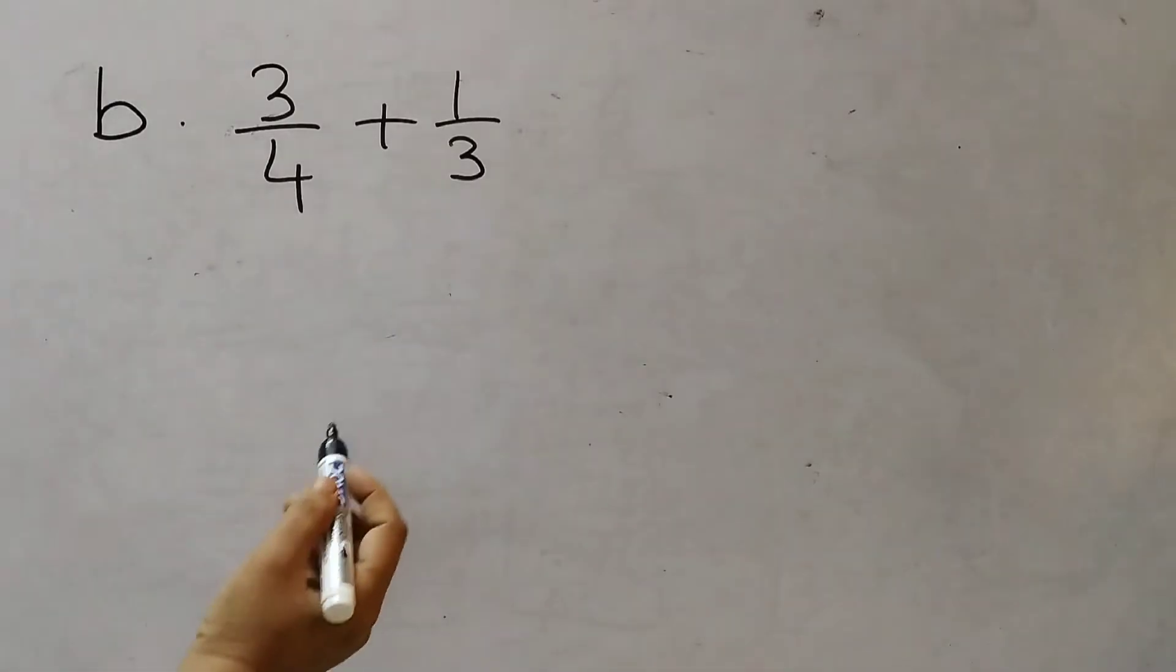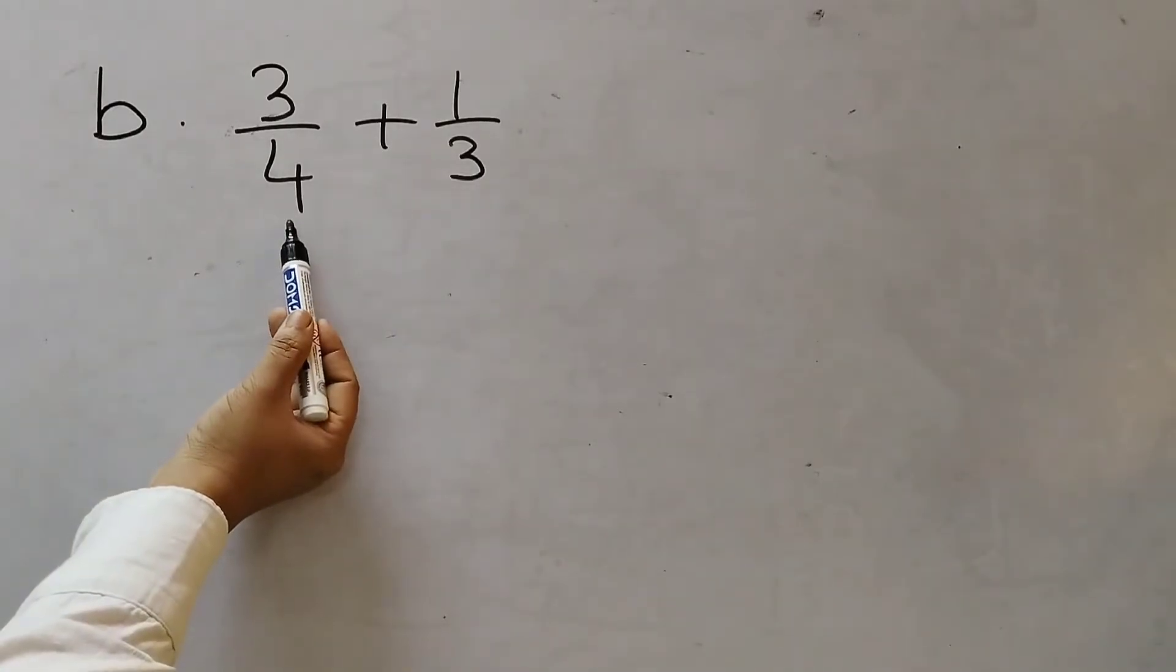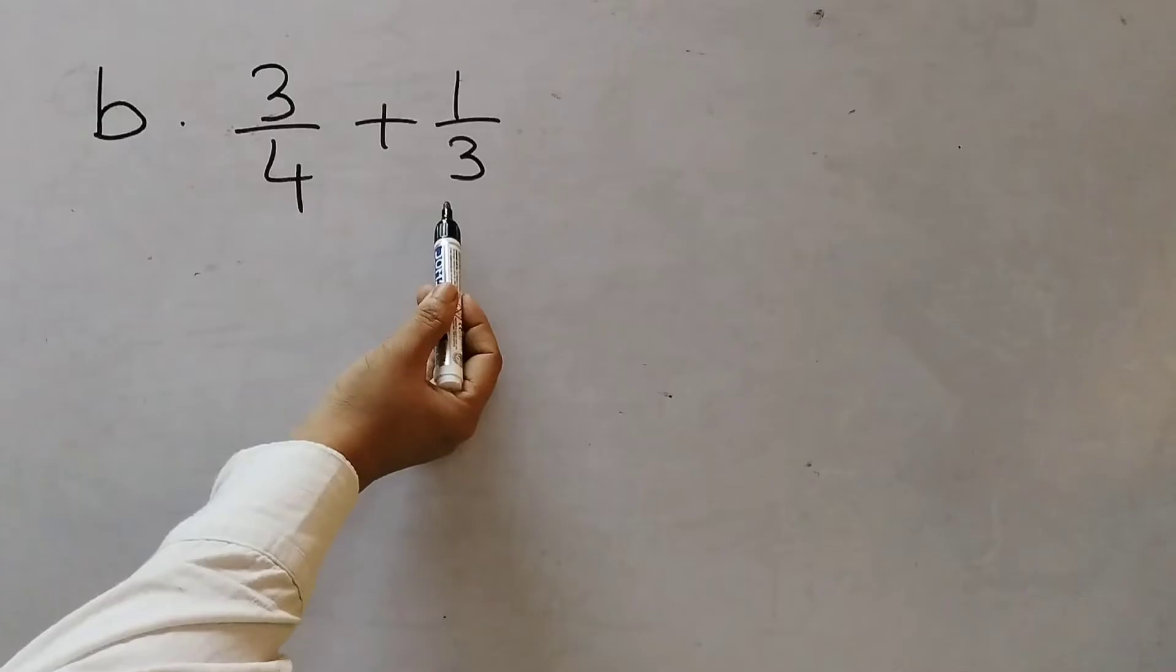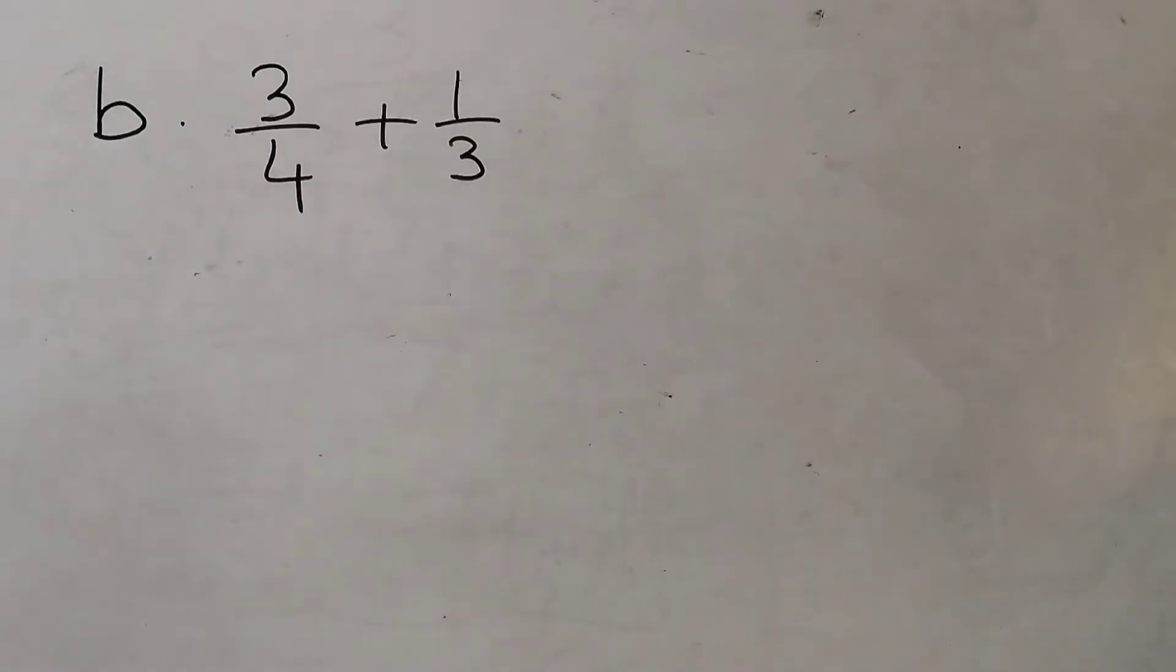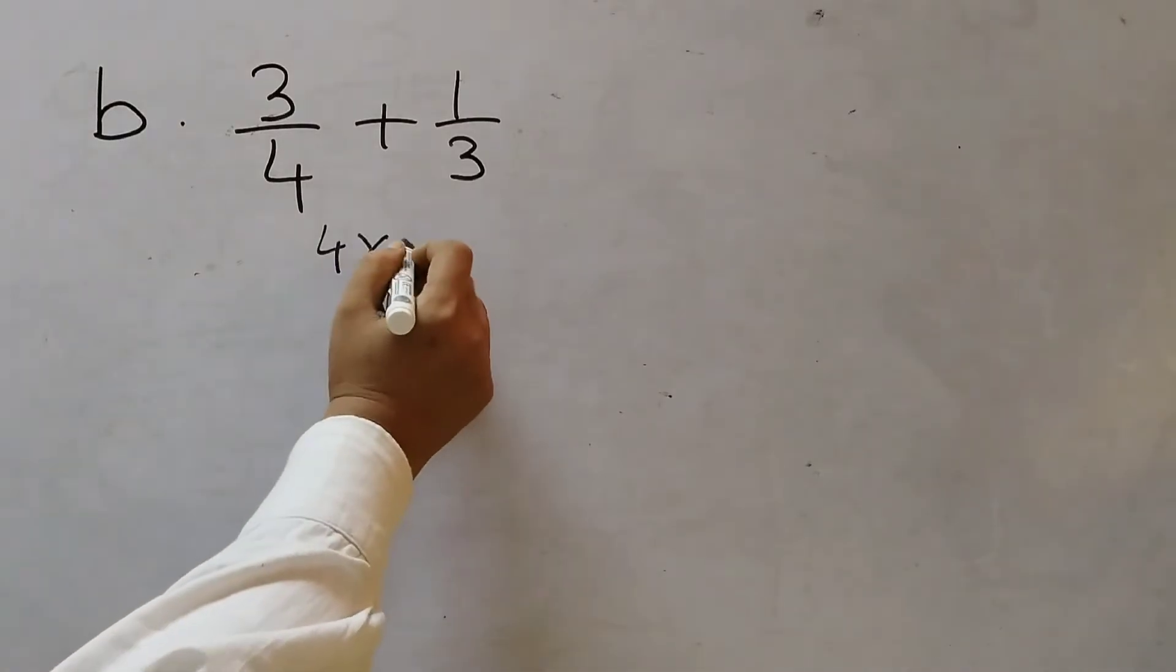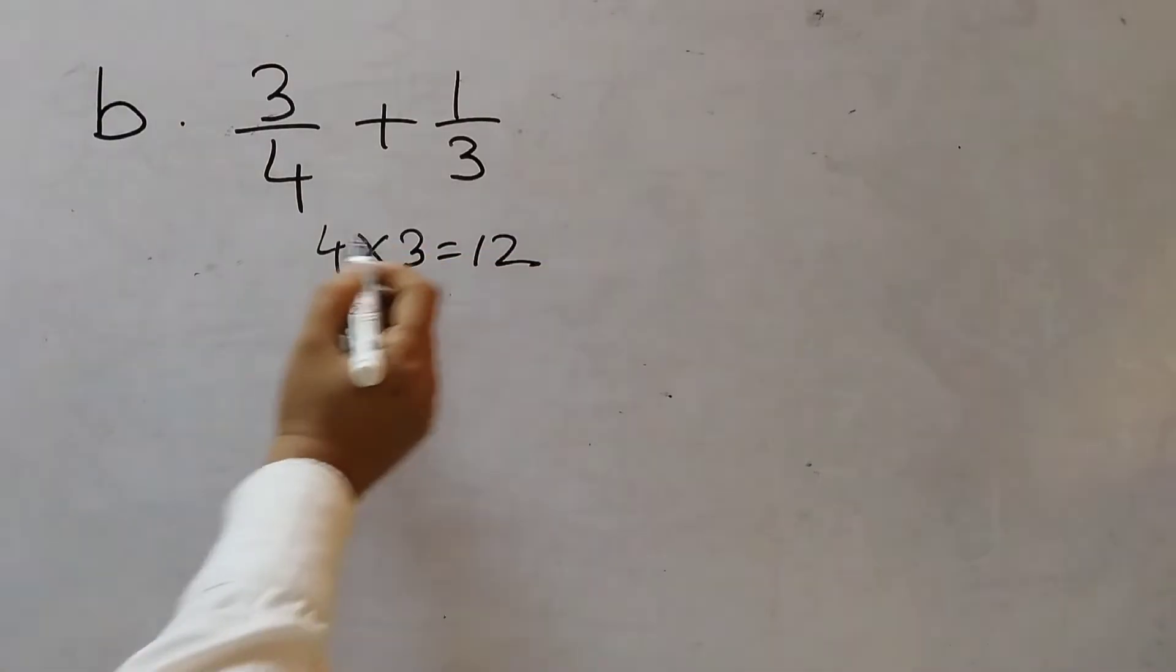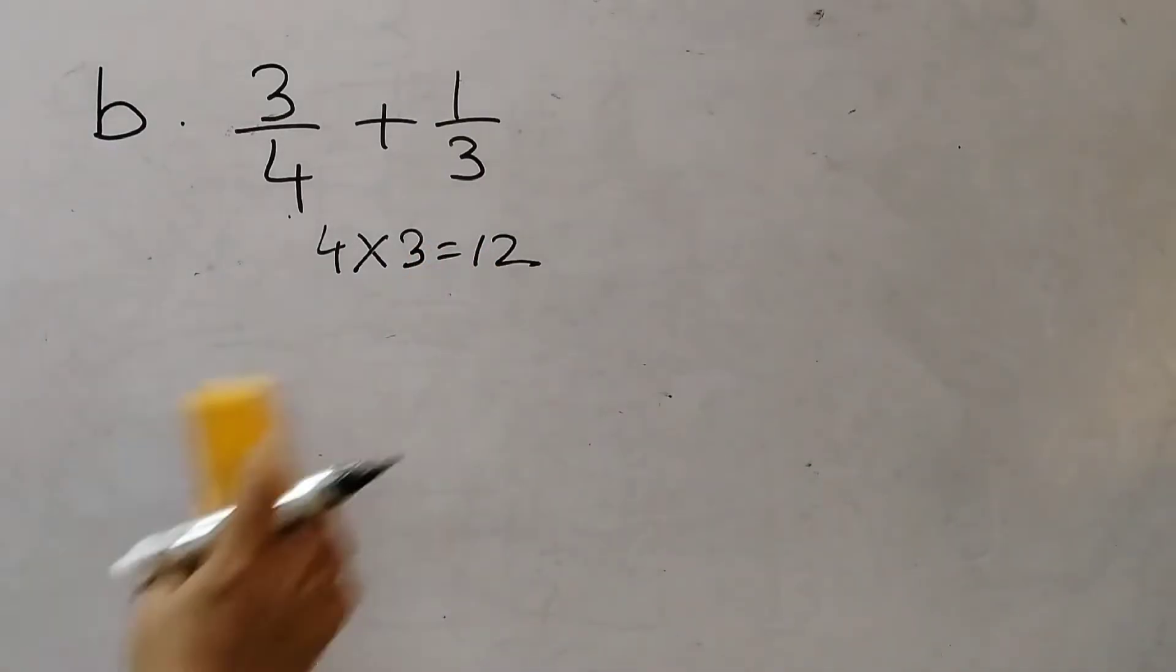Moving on to the next question. 3 by 4 plus 1 by 3. Now see here the denominator is 4 and 3. So we cannot add these fractions. First we have to make the denominator same. So for that we will find the smallest common multiple of 4 and 3. So we can do 4 into 3. 4, 3 is 12. So we can make the denominator 12 for both.